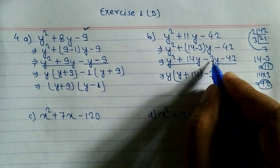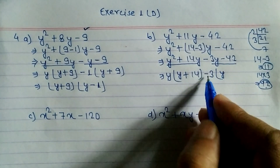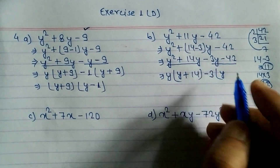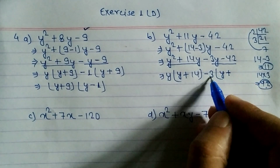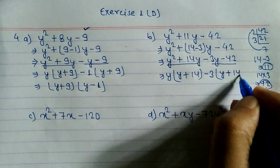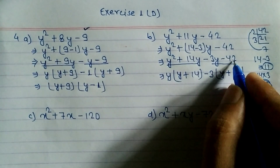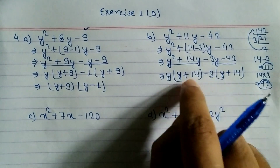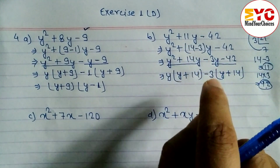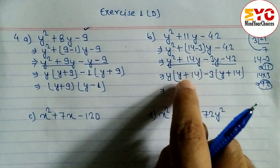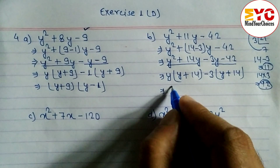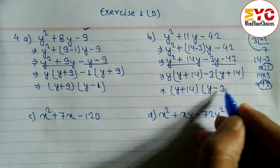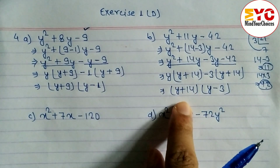Taking -3 common from -3y - 42: when minus is common, change the sign. So it becomes -3(y + 14). Note: 3 × 14 = 42. You can see (y + 14) appears in both groups — this confirms our calculation is correct. Taking (y + 14) common, we get (y + 14)(y - 3). That is the answer for problem B.